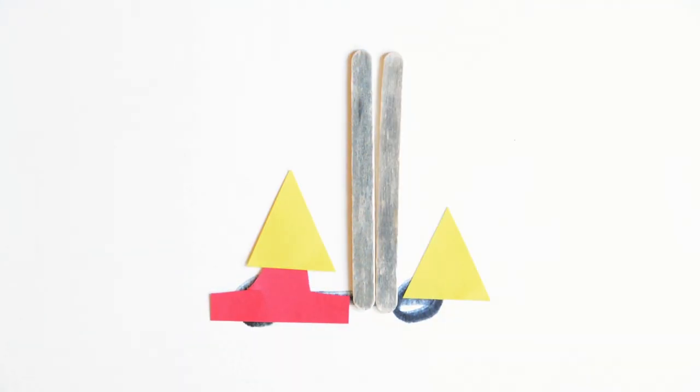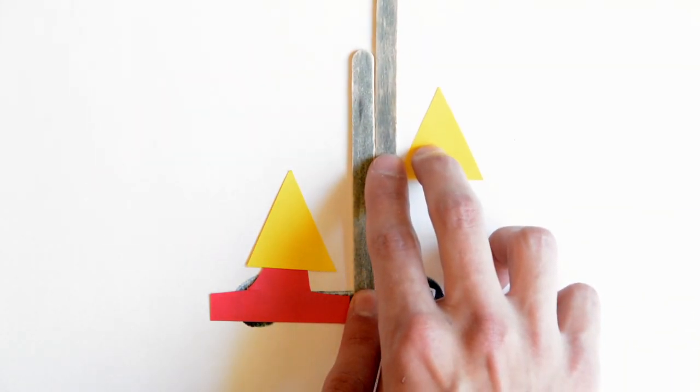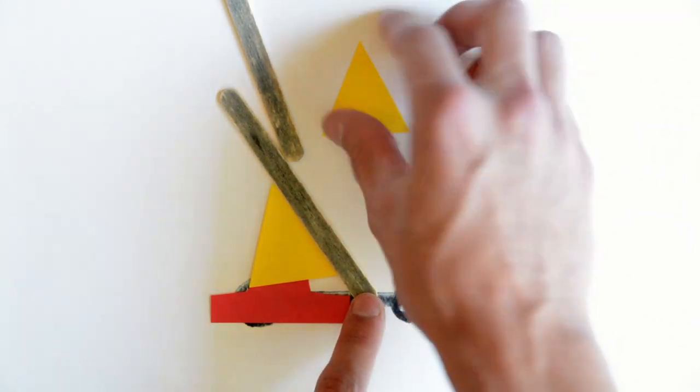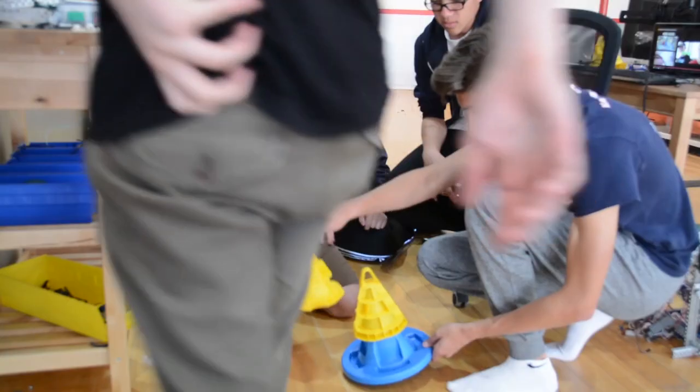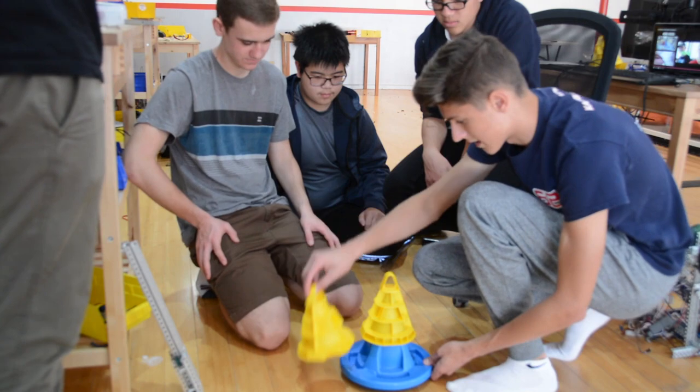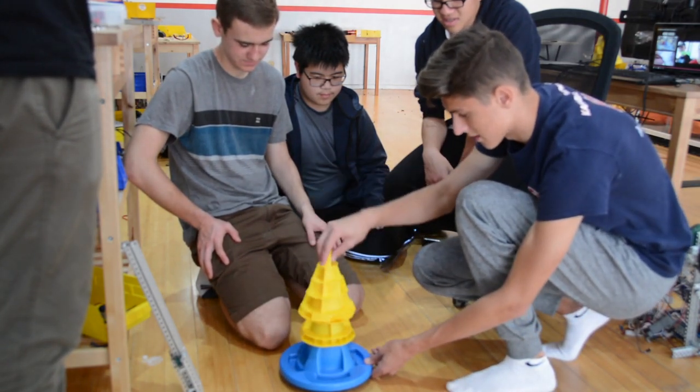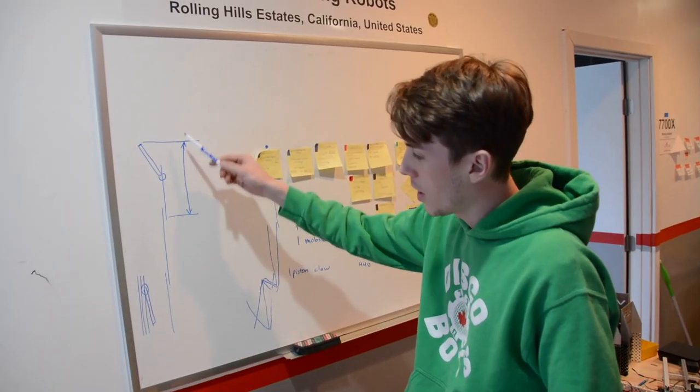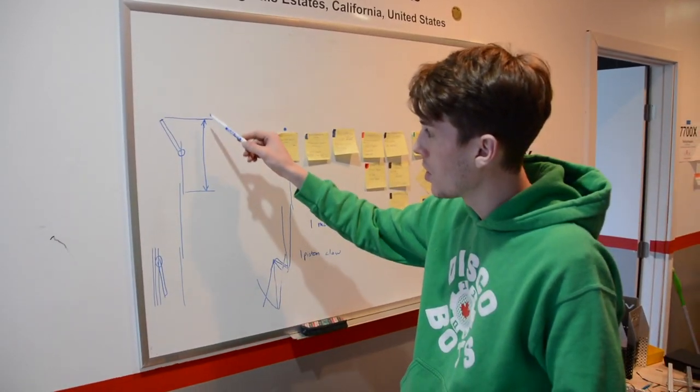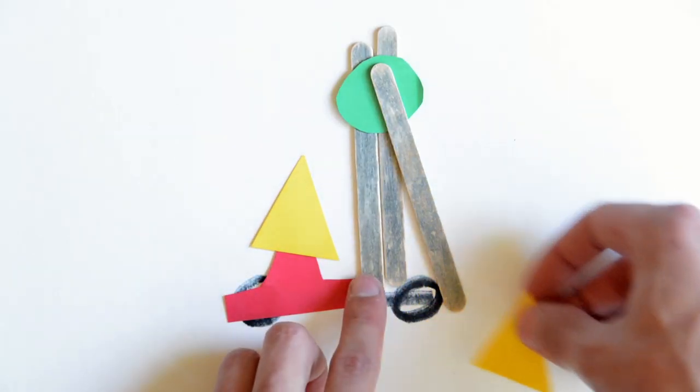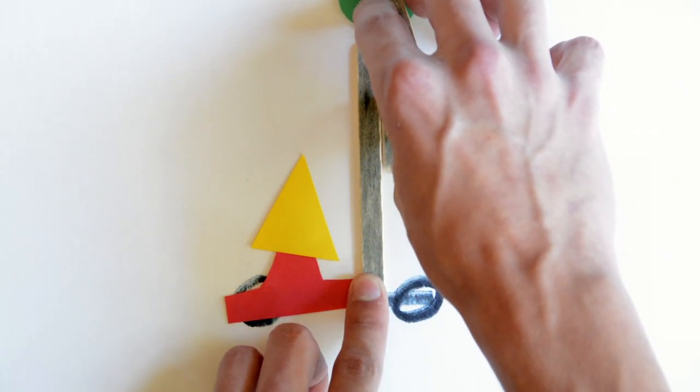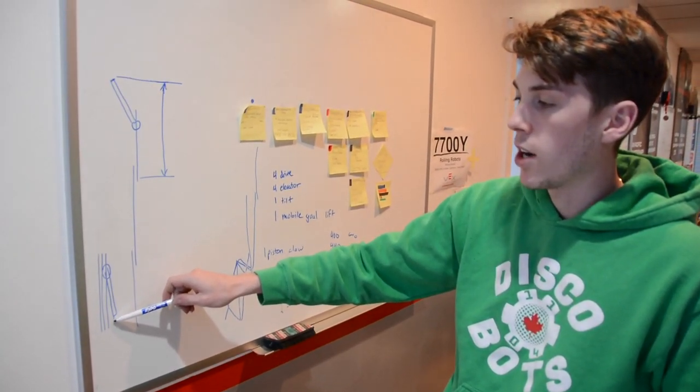The first lift we looked at was the elevator lift. This was our go-to lift. So we decided that in order to get the cones over from the intake over to the movable base, we'd either have to tilt the movable base, tilt the lift, or slide the base underneath the lift. We've got an elevator lift here with three stages.